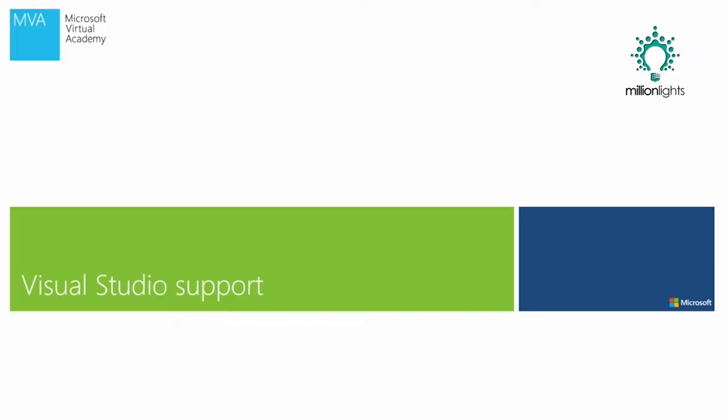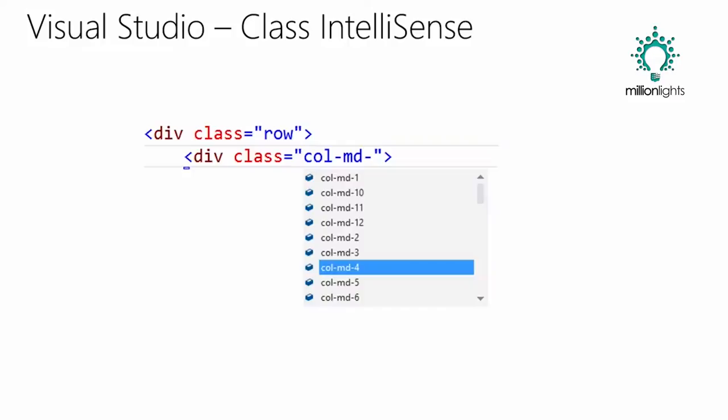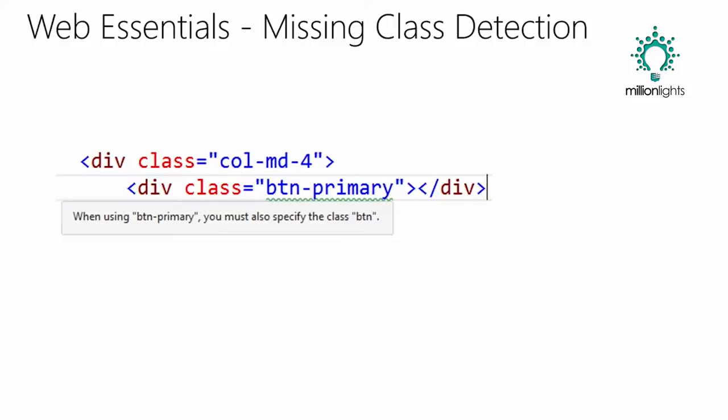Let's look at Visual Studio support. We've been looking at Visual Studio support all day, so I'm just going to recap what we've got. One is class IntelliSense, which is huge and super useful. You can just go in and start editing and that's going to work everywhere. If you install Web Essentials — which installs on Express and every version of Visual Studio 2013 — that will bring in things like missing class detection, which is really helpful.